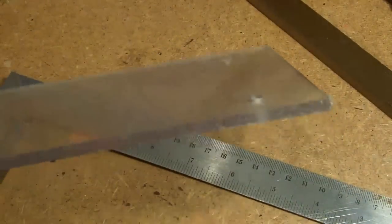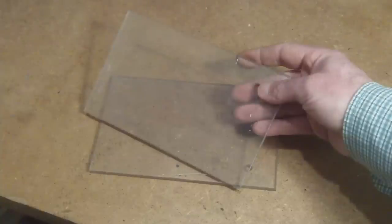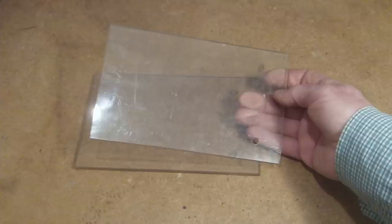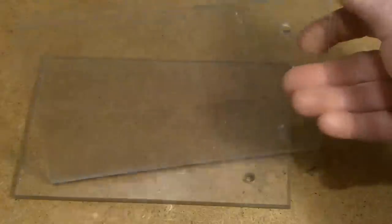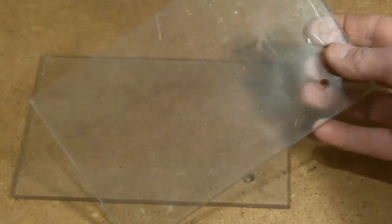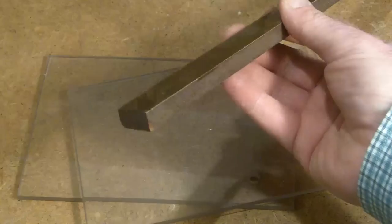I found another sheet of perspex with some holes in so this time I cut it with a hacksaw and didn't risk breaking it. I can cut and break polycarbonate sheets with a Stanley knife but I've forgotten I can't really do that with perspex.